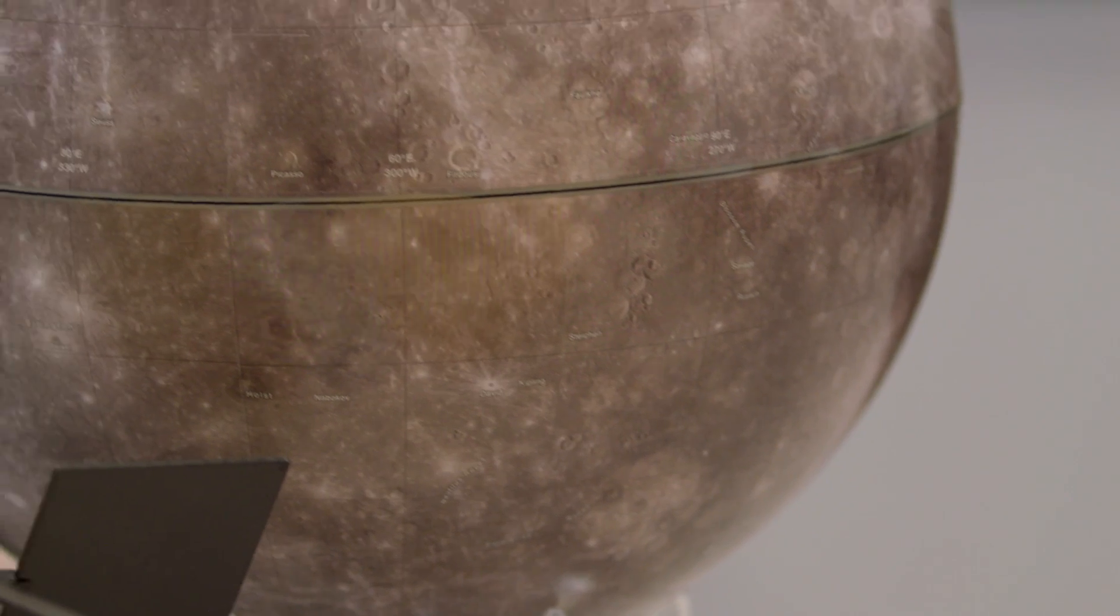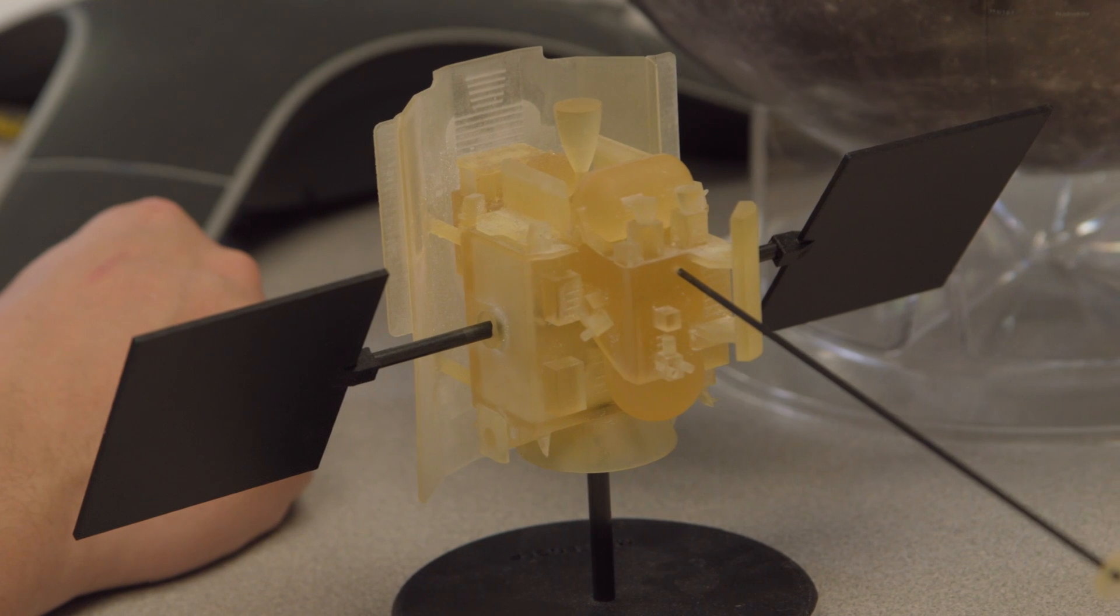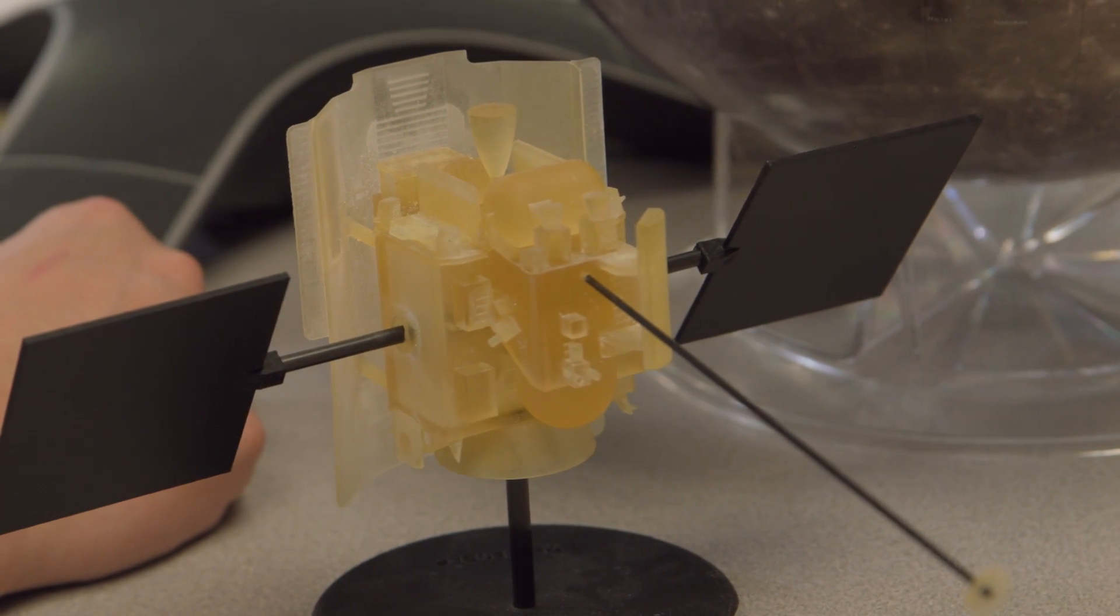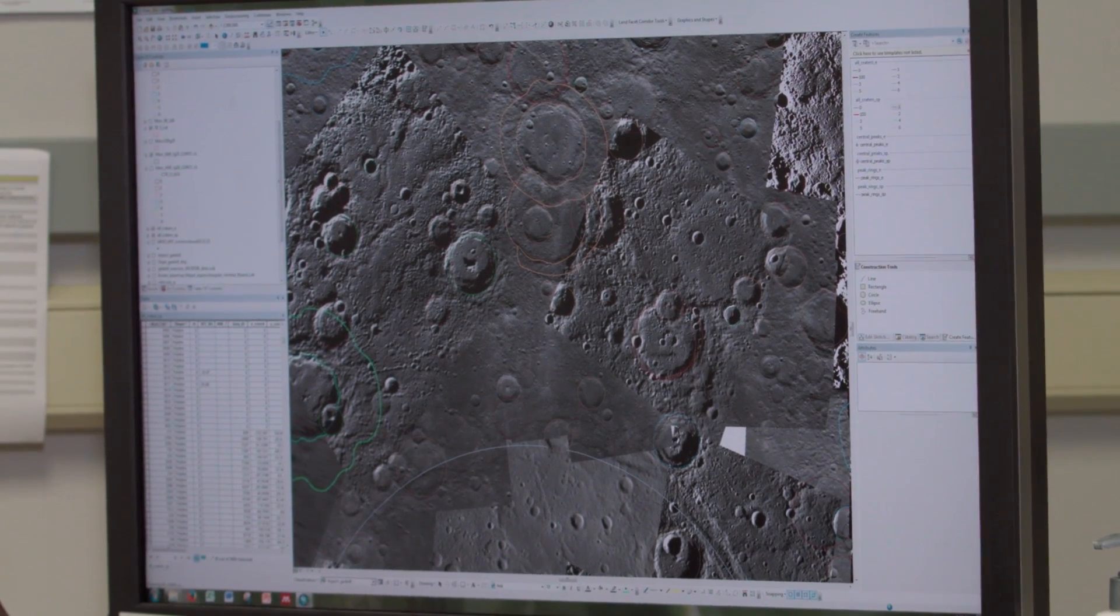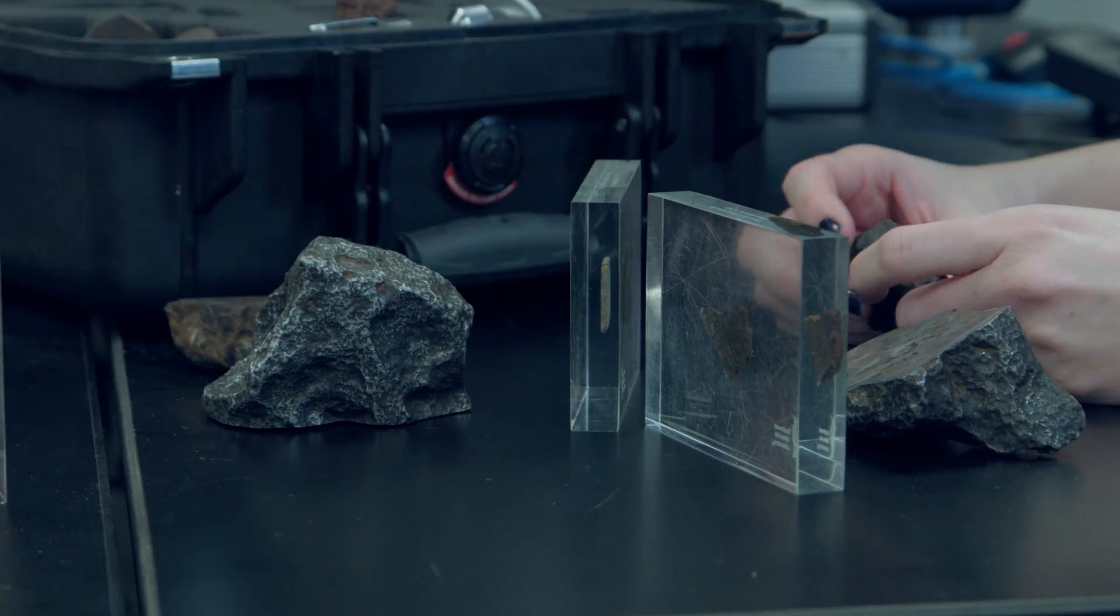Her research took off when she became a postdoc research associate at Arizona State University. One of the basic questions posed by NASA's Messenger mission to Mercury, which helps us understand how terrestrial planets compare, is the extent of volcanism.